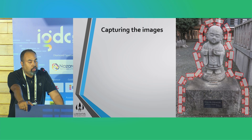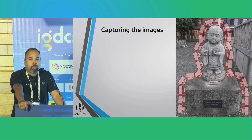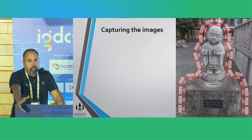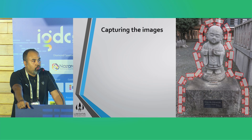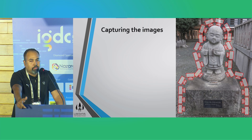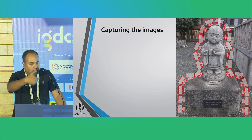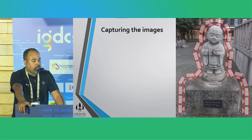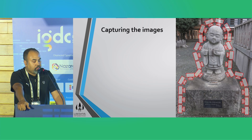When capturing images from a still subject, you can mount it on a rotating platform and take captures in increments. If you are working with a live person or a human being, you can use the handheld method — revolve around the subject with the camera taking as many images as possible from multiple angles.